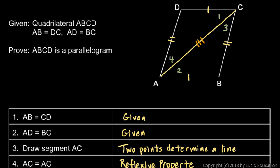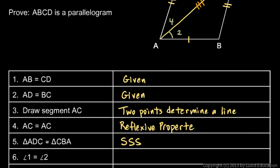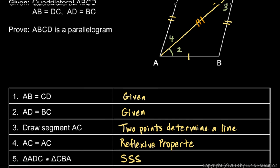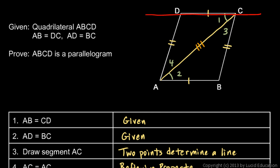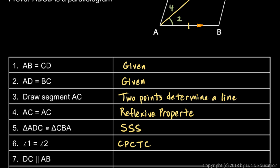If those triangles are congruent, then the corresponding parts are congruent, so angle 1 must equal angle 2. The reason is that corresponding parts of congruent triangles are congruent. Now if angle 1 equals angle 2, remember those are alternate interior angles for those two sides, so side DC must be parallel to side AB. Let's mark that with arrow indicators. DC is parallel to AB because of equal alternate interior angles.